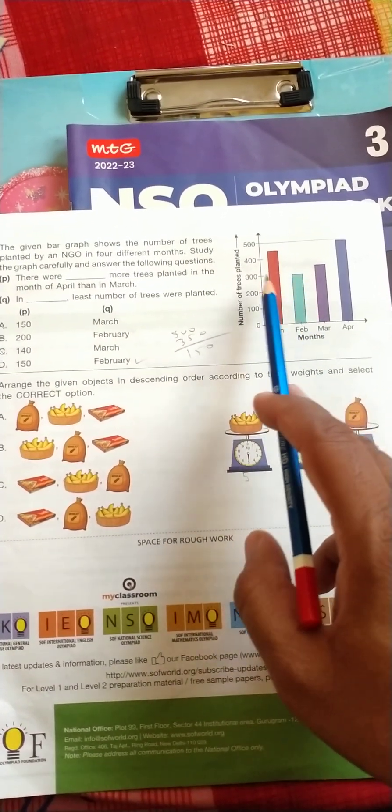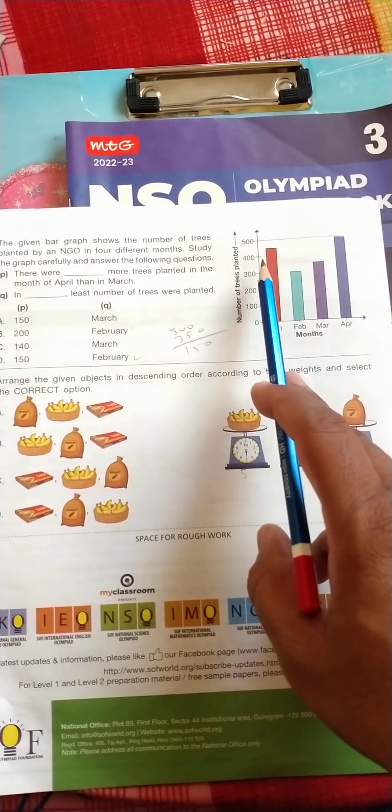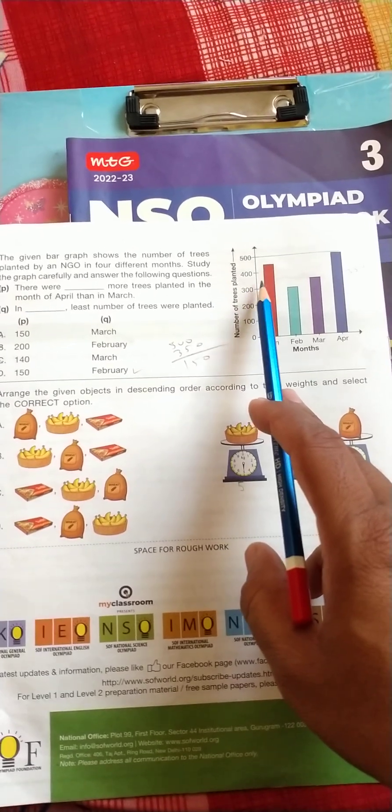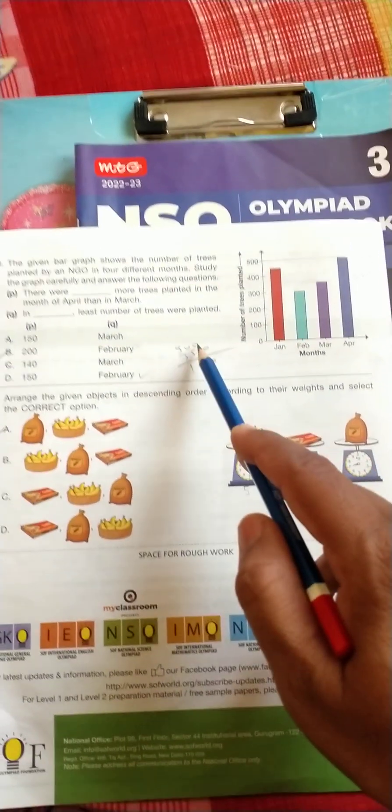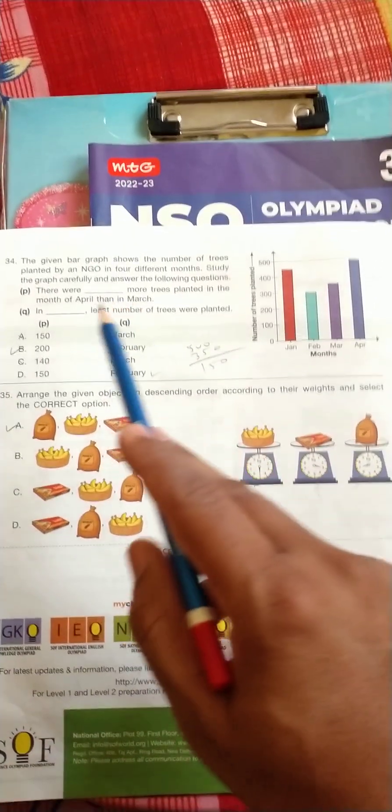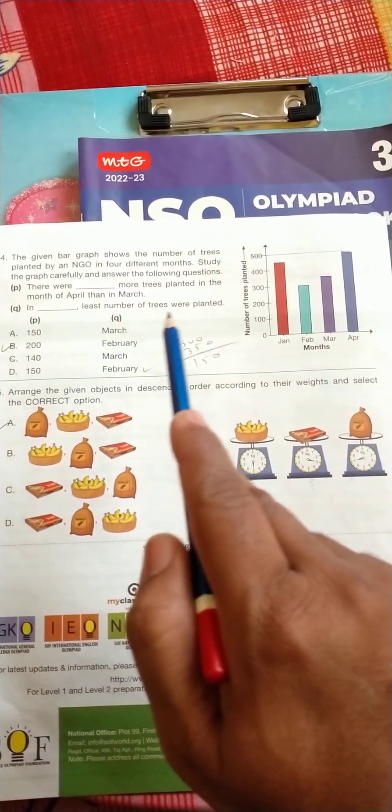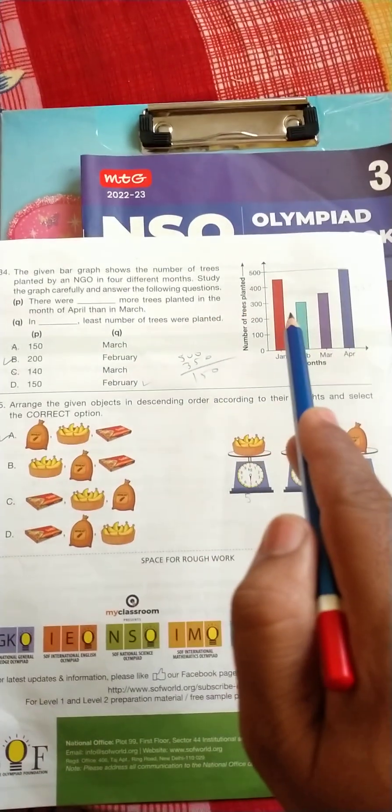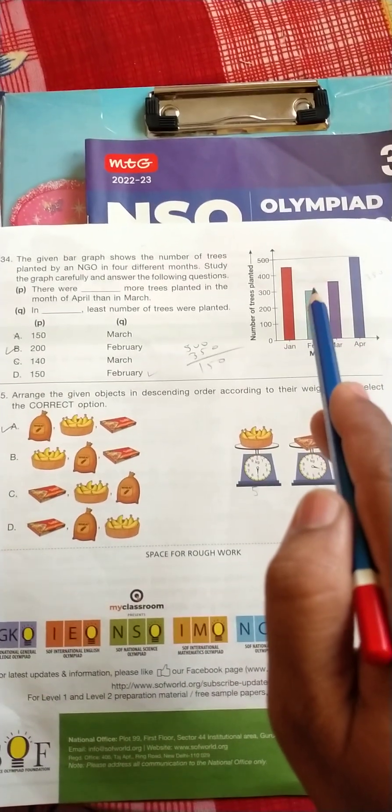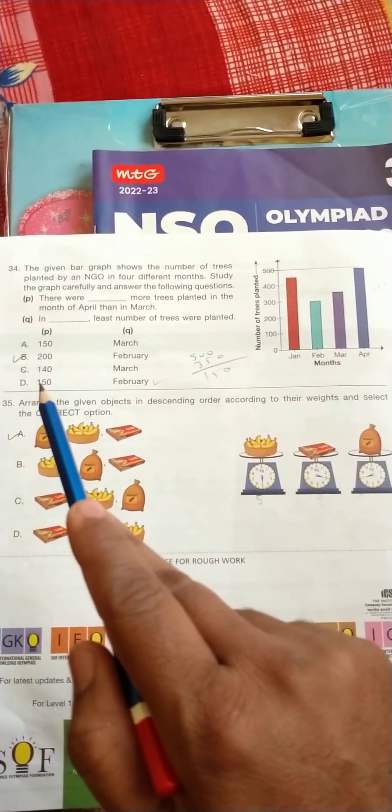And in the month of March it is more than 300 and less than 400, it means that 350. So 500 minus 350, that's 150. Second option Q: in least number of trees were planted - so least number of trees are planted in the Feb month, so the correct option is D.